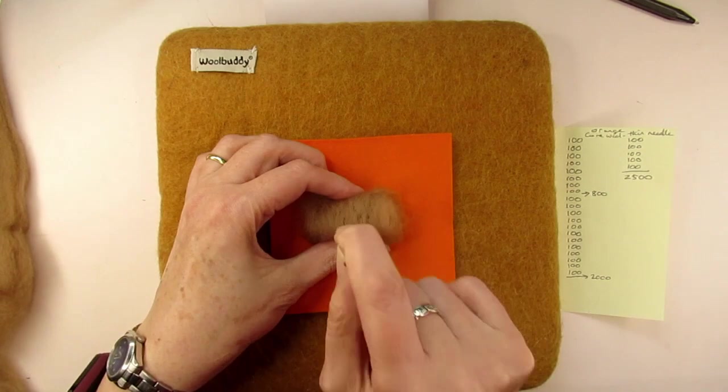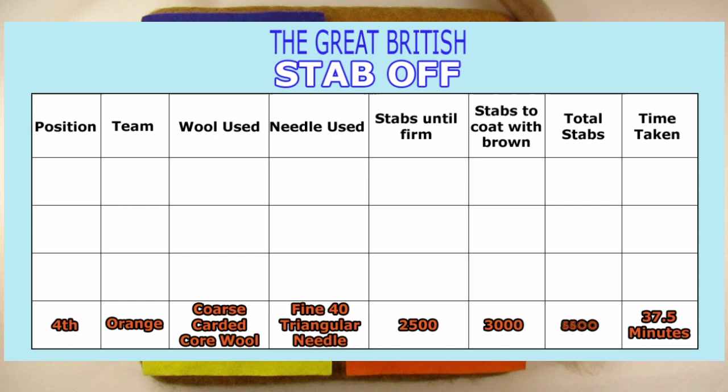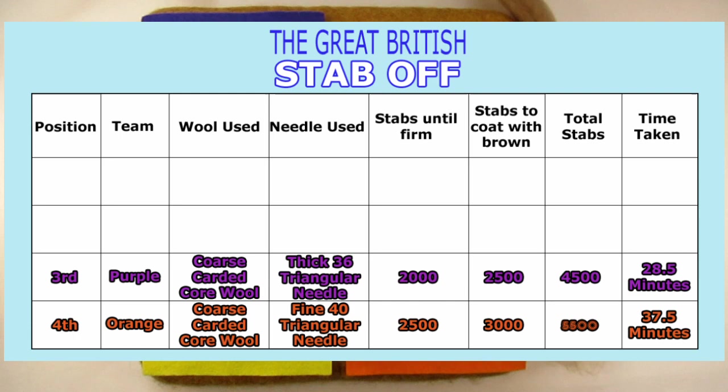If we're looking at how many stabs it took to get an item firm enough and brown, then the results are: in fourth place is the orange combination of coarse wool stabbed with fine needle for 2,500 stabs initially and then a further 3,000 stabs to coat it evenly with the brown merino wool. In third place comes the purple combination, which was a core wool that only needed 2,000 stabs with a thick needle to get it firm enough, but then took a further 2,500 stabs to coat it in brown merino wool.